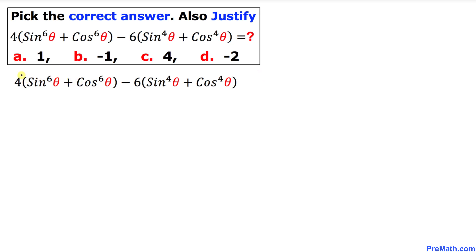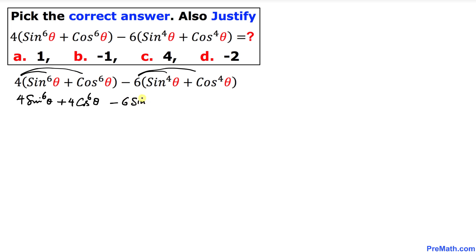Let's use the distributive property — distribute this 4 and likewise this negative 6. So we are going to get 4 times sine to the power 6 theta, plus 4 times cosine to the power 6 theta, and then minus 6 times sine to the power 4 theta, and minus 6 times cosine to the power 4 theta.